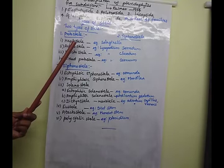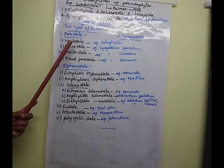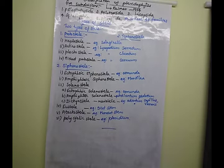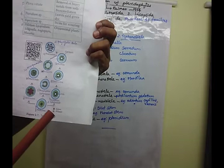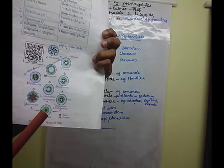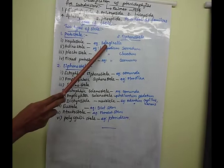The first sub-type of protostele is haplostele. Haplostele means the xylem is surrounded by phloem - xylem is at the central region surrounded by phloem elements. That is known as haplostele. A good example of haplostele is Selaginella.